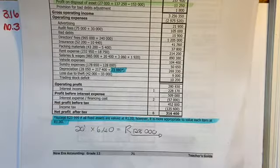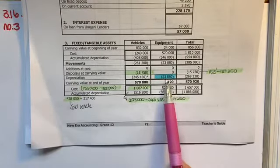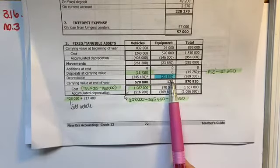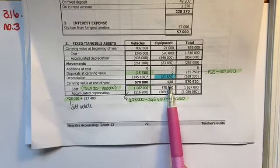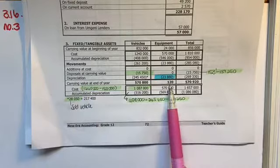And then finally just look at the end, look where it goes in note number three. At the bottom here, 23,880 is what I'm going to have for my movement. So I'm sitting with 120 as my carrying value at the end of the year.